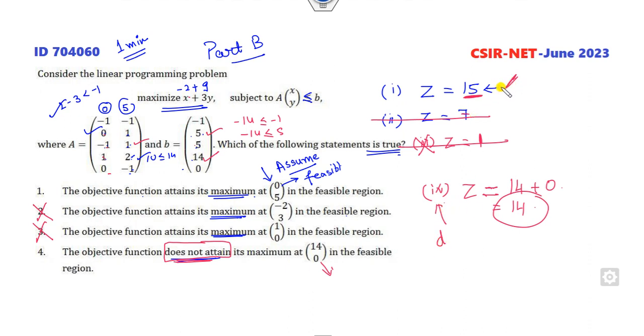It means what is the meaning? It does not attain its maximum—definitely the fourth option does not attain, why? Because we already obtained a maximum value of 15, not 14. So definitely this is my correct option.